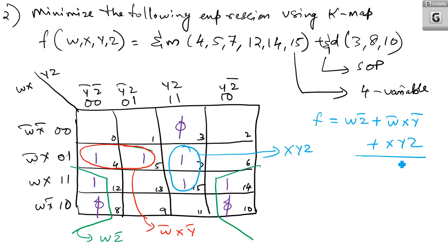That is the most simplified form of the expression — the minimized SOP form using the KMAP technique with don't care combinations. Moving on to the next question.